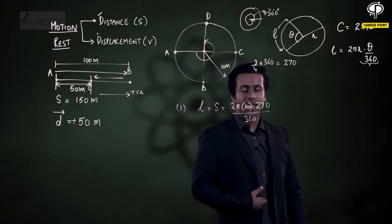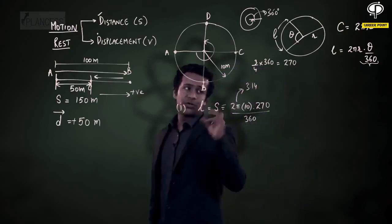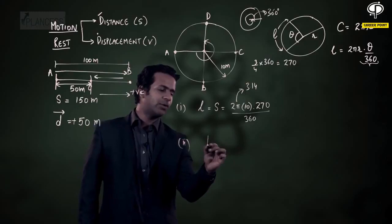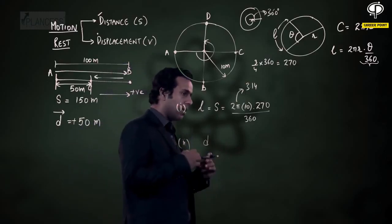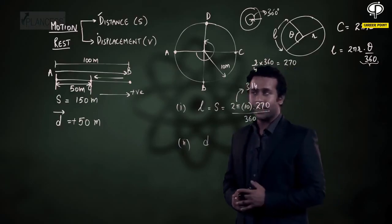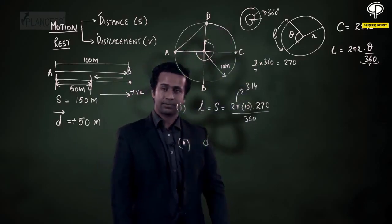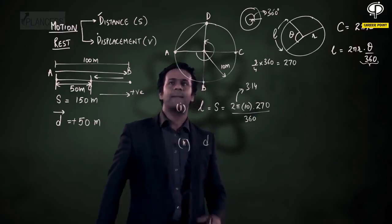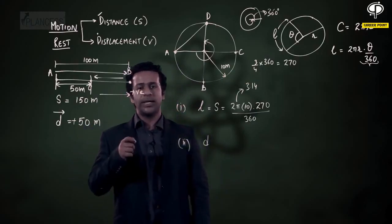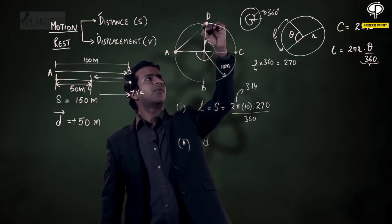The value of π is 3.14 — you should remember this value. I will leave the calculations up to you. Let's move on to the second part where we have to find the displacement. To find displacement, we need to join the initial point with the final point. So, to calculate displacement, let's join points A and D. Displacement is nothing but the length of line AD, and the direction points from the initial position to the final position.